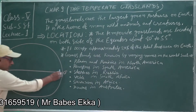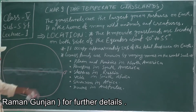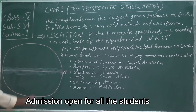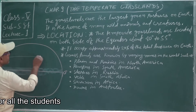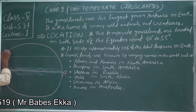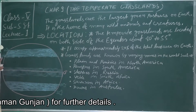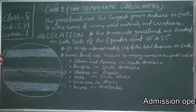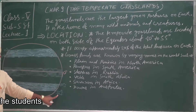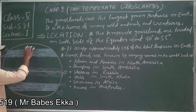Previously we studied the equatorial region — 10 degrees north to 10 degrees south — then deserts at 15 to 30 degrees. Now temperate grasslands: 40 to 55 degrees north in the northern hemisphere, and 40 to 50 degrees south in the southern hemisphere. So grasslands are found in both hemispheres.